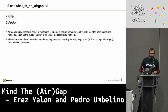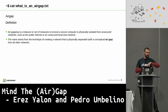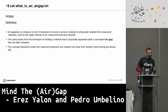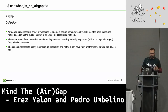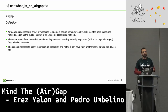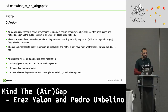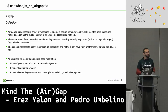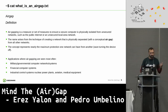So what's an air gap? An air gap is a measure or set of measures that ensures a secure computer or system is physically separated from an unsecure network. The name arises from this conceptual air gap that exists between the two networks. In theory it represents the maximum security a network can have from another, though in practice it's very hard to implement. Applications where air gapping is seen most often include military or government networks, financial systems, industrial control systems like nuclear power plants, medical equipment, aviation, and SCADA systems.